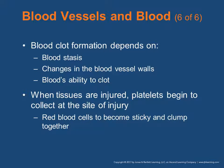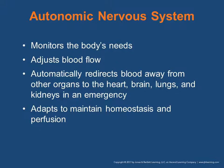Blood clot formation depends on blood stasis — the ability of the blood to stay in one spot — changes in the blood vessel walls, and the blood's ability to clot, which is an entire cascade of clotting factors that come from our liver. When tissues are injured, platelets begin to collect at the site of injury, red blood cells start to clump together. The autonomic nervous system monitors the body's needs, adjusts blood flow, and automatically redirects blood away from other organs to the heart, brain, lungs, and kidneys in an emergency. It adapts to maintain homeostasis and perfusion.